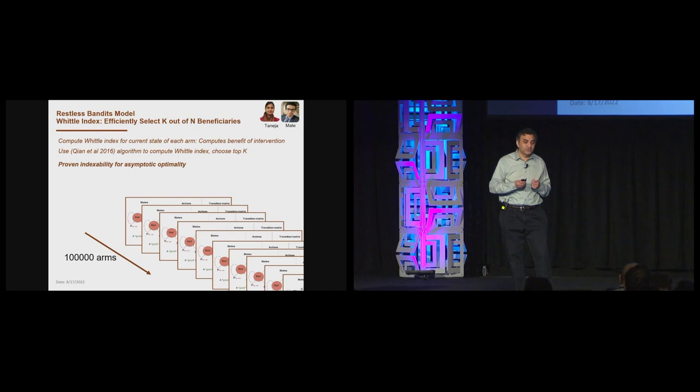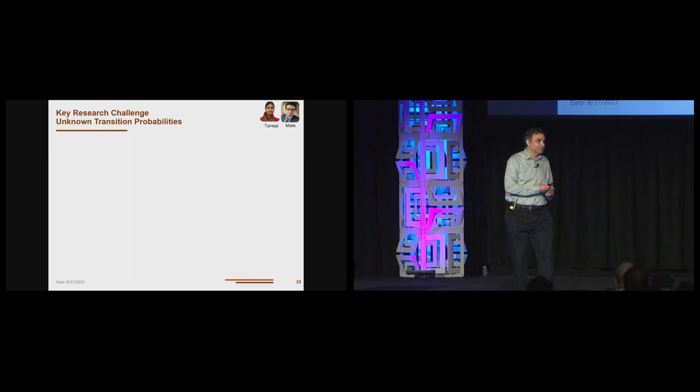So one way to solve this problem is to use the Whittle index. We compute a Whittle index for each state of the arm. It gives us a ranking of all of the beneficiaries. And essentially, it's computing a benefit of intervention. More technically, it's the minimum subsidy that we can offer a passive action in a state so that the Q value of the passive and active action becomes equal. There's no out-of-the-box algorithm that can be applied to compute a Whittle index.